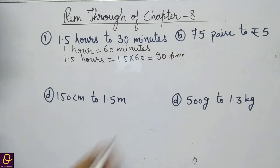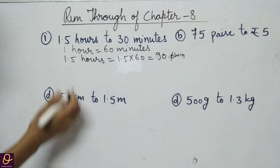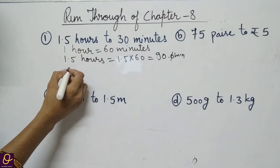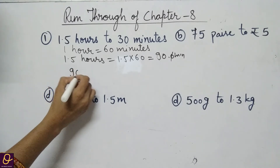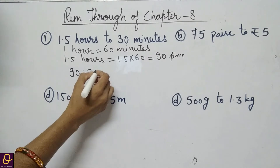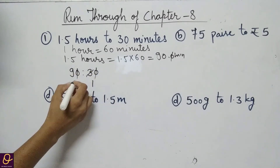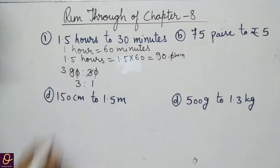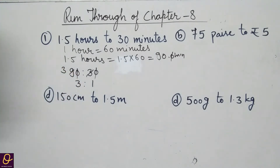Now the unit is the same: 90 minutes and 30 minutes. Now we will write in the lowest form as a ratio. 90 ratio 30 — the zeros cancel, giving 9 to 3, which simplifies to 3 ratio 1. Our answer is 3 ratio 1.